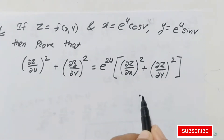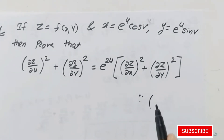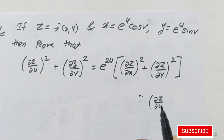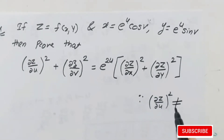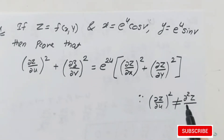If we are saying (∂z/∂u)², it does not mean it is ∂²z/∂u². It is the first derivative squared, not the second derivative.